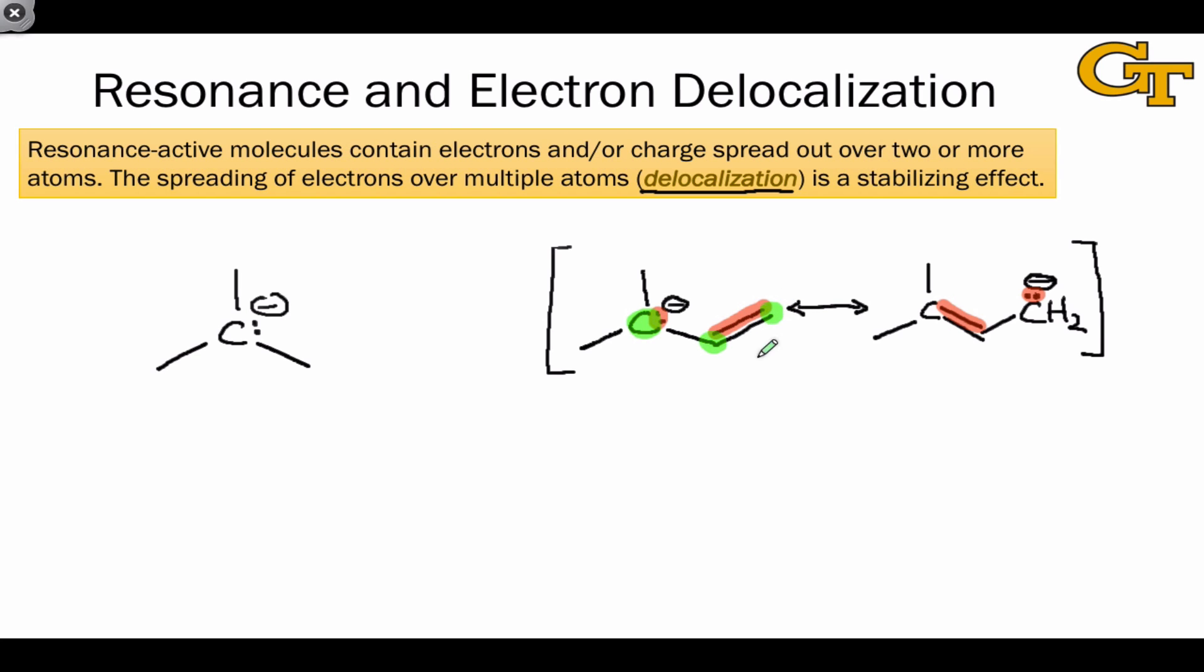Compare that to this localized situation on the left where this lone pair is clearly localized on an n-type non-bonding orbital on this carbon atom. Because the electrons have more room to roam, in this case on the right, than the case on the left, we should expect the molecule on the right to be more stable than the molecule on the left.